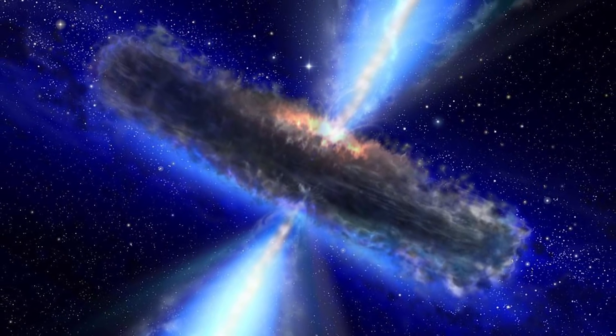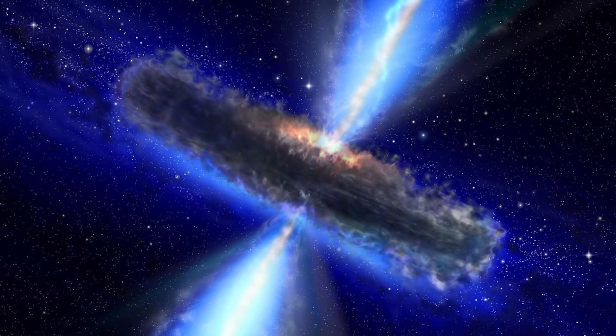When gravitational waves hit Earth, they stretch the space around Earth. But it's so insignificant that if there was a 621,000-mile-long ruler, when a gravitational wave hits, it would stretch the ruler by only the length of an atom. Because of this, even Einstein thought we would never be able to detect gravitational waves.